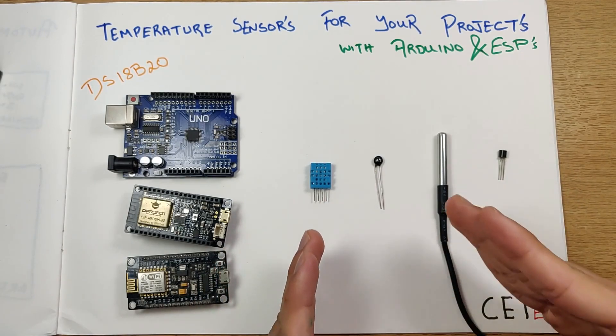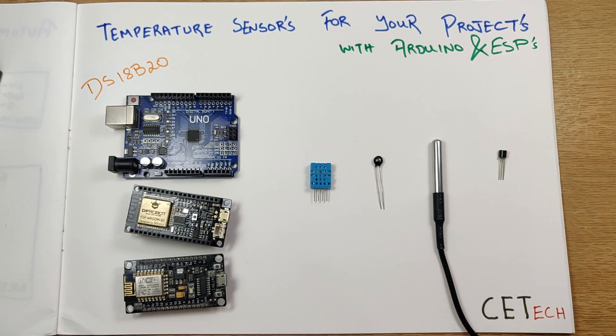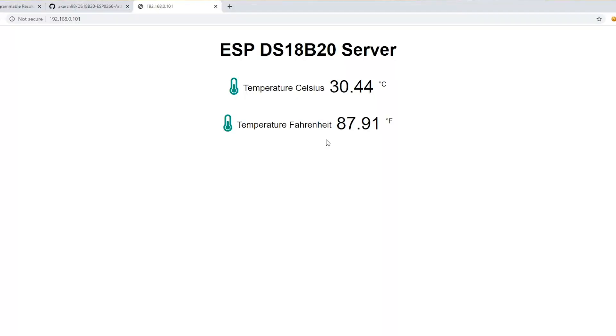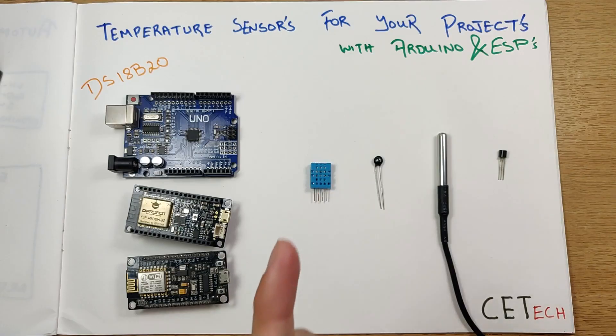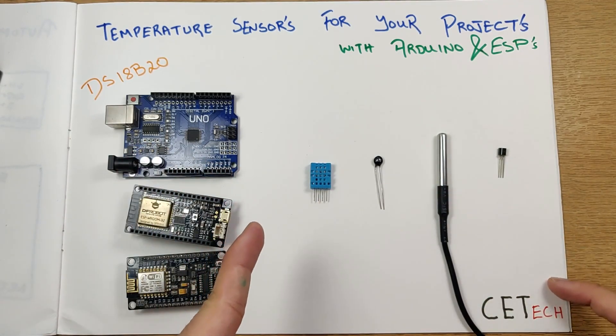We'll be looking at the difference between these, the use case, the application, the advantages and disadvantages of each particular sensor. Towards the end of the video we'll be using the DS18B20 with the ESP8266 and making a web-based server which shows the temperature. If that seems interesting, stay tuned because it's happening over here at CE Tech.